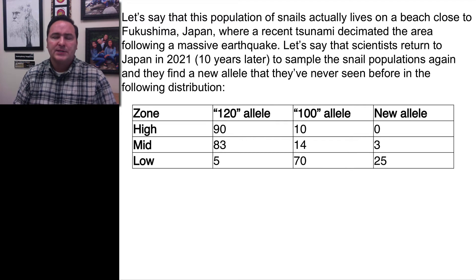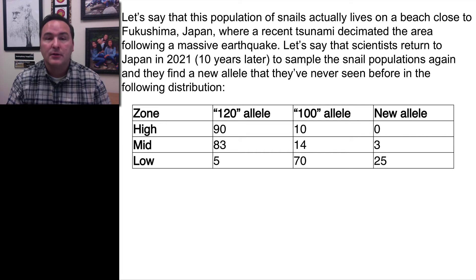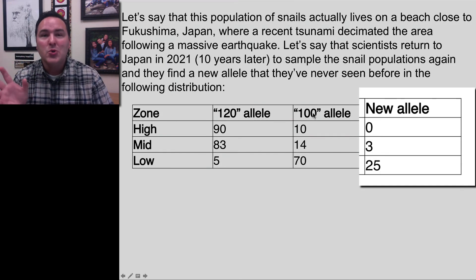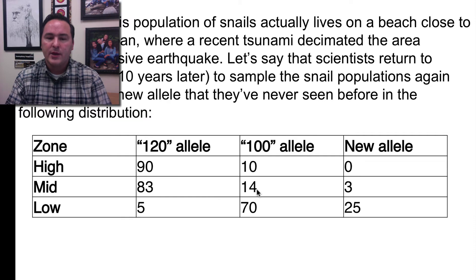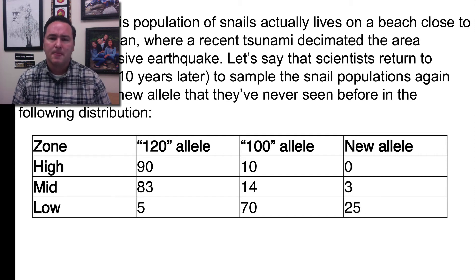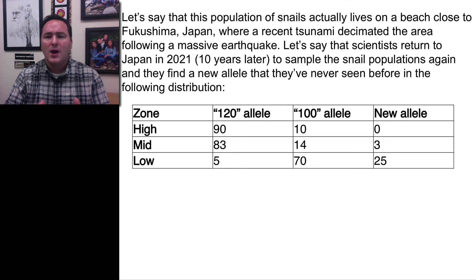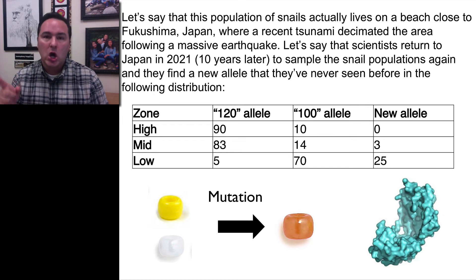Now let's imagine a situation where some of these snails live close to Fukushima, Japan, where that tsunami occurred. Scientists come back in 2021 and look at the allele frequency of the 120 allele and the 100 allele, but they notice there's a different allele as well — a new allele. In the high tide zone it's still 10% and 90%. In the mid zone it's 83%, 14%, but there's 3% of this new allele. But in the low tide zone, there's only 5% of the 120 allele, 70% of the 100 (white) allele, and this new allele is present in 25% of the individuals. How can we explain this? What causes this new allele to occur?